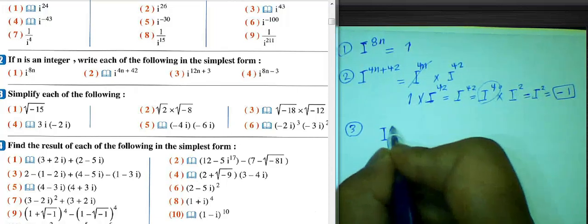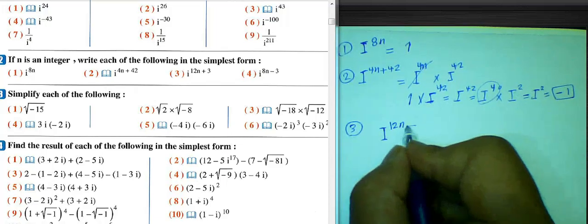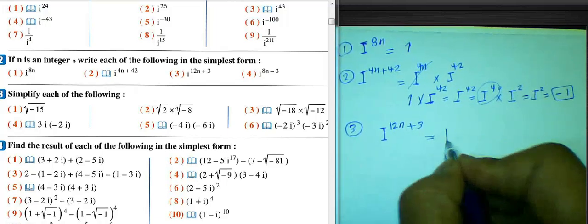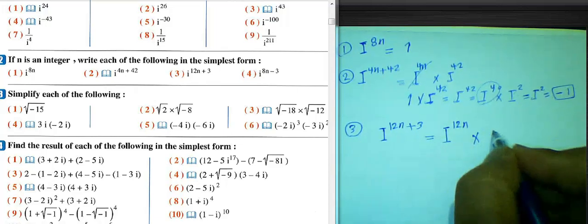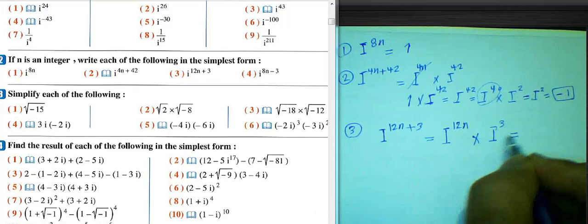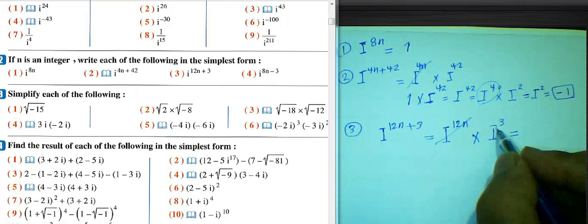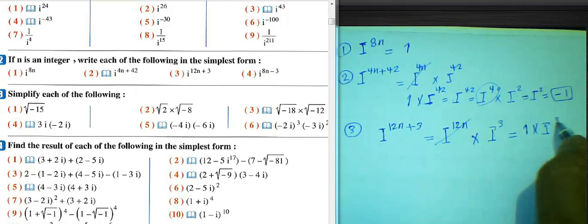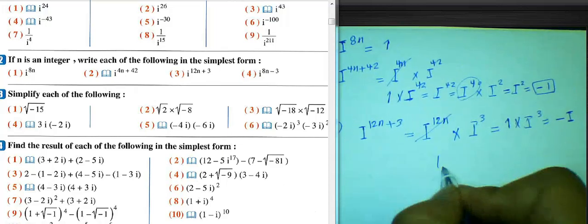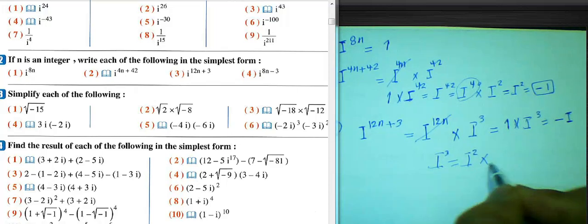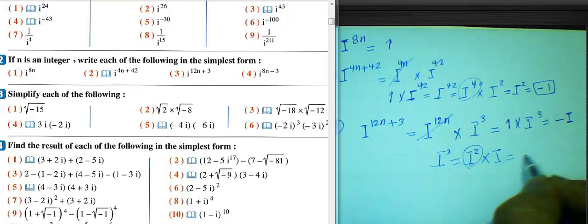Question 3: i^(12n+3). We can write this as i^(12n) times i^3. i^(12n) equals 1, and i^3 equals negative i, because i^3 equals i^2 times i, and i^2 equals negative 1, so negative 1 times i equals negative i.